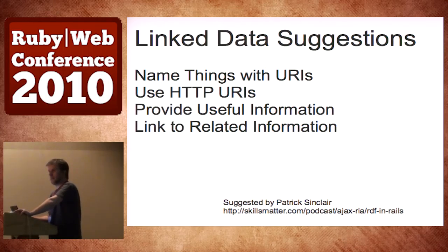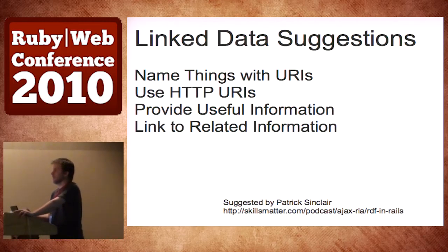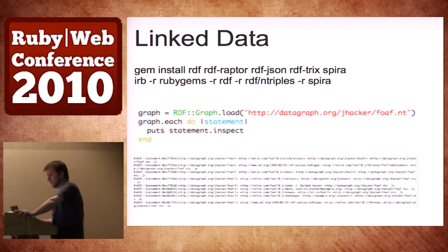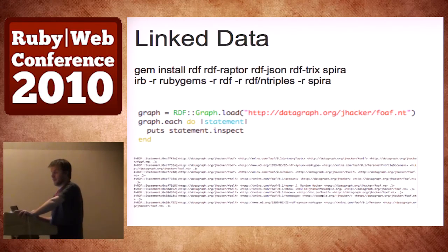Wikipedia has largely been converted to DBpedia, which contains all the RDF information for the same content. The BBC has major commitments to linked data. There are huge resources with amazing amounts of data you can consume and relate to your own web services. In the Ruby world, we have some pretty good ways of doing that: `gem install rdf`, `rdf-raptor`, `rdf-json`, `rdf-trix`, and `spira`. There's a good blog keeping the RDF Ruby stuff intact — not very active, but well-written when they do post.